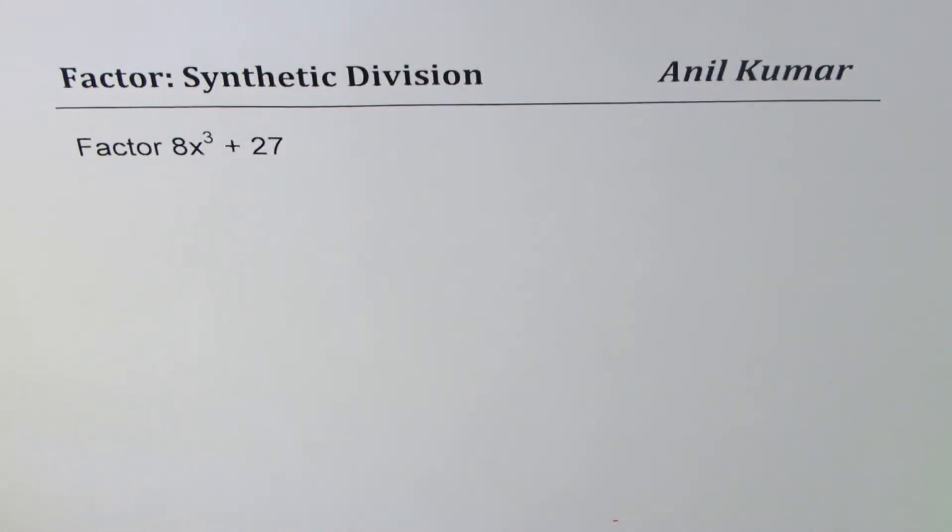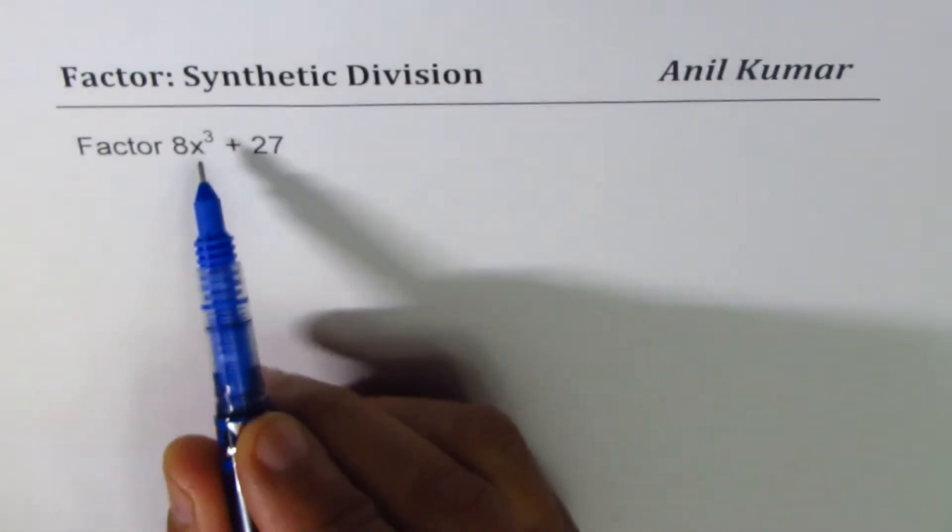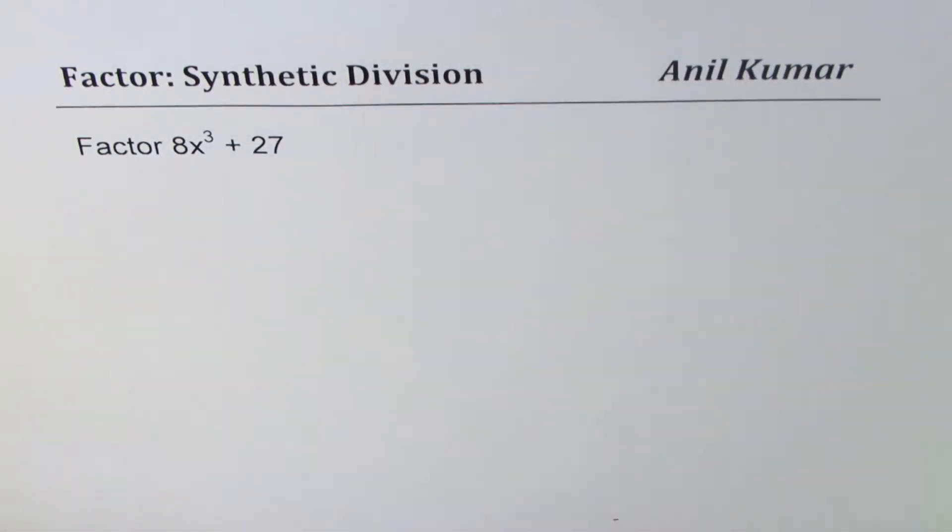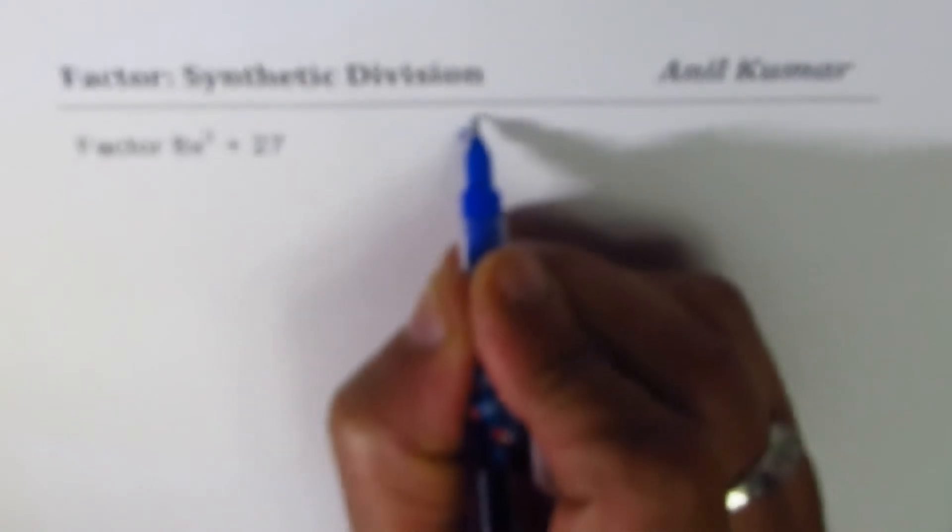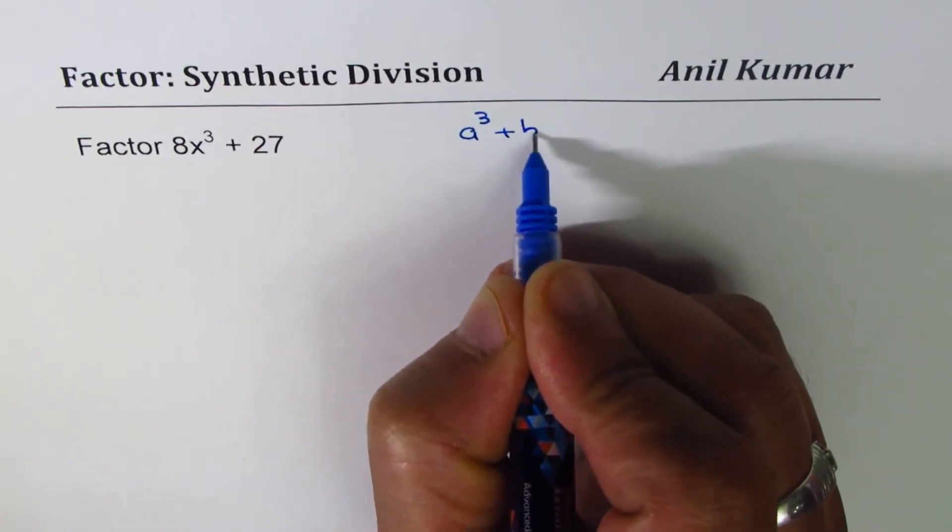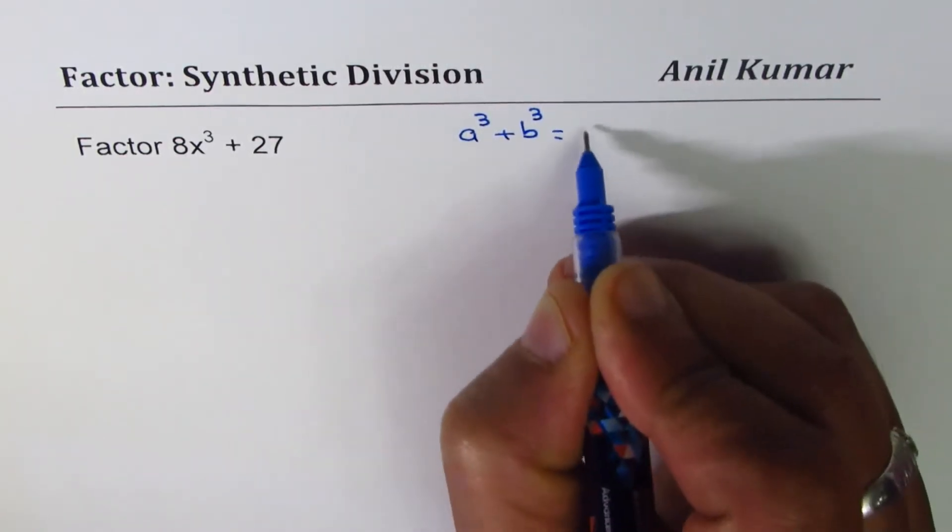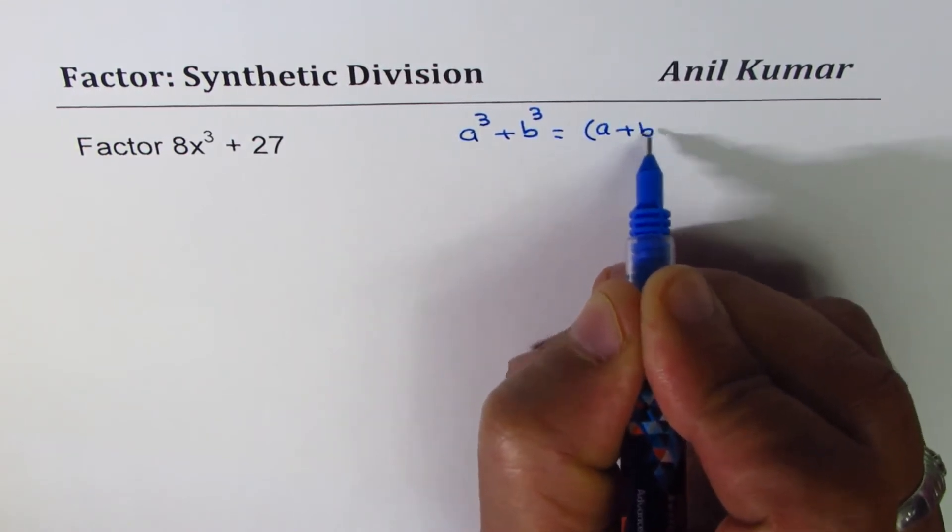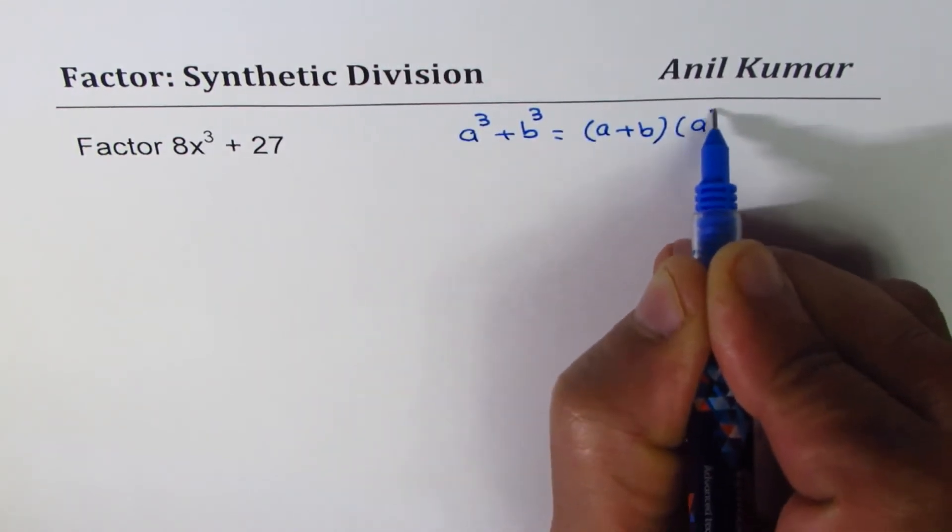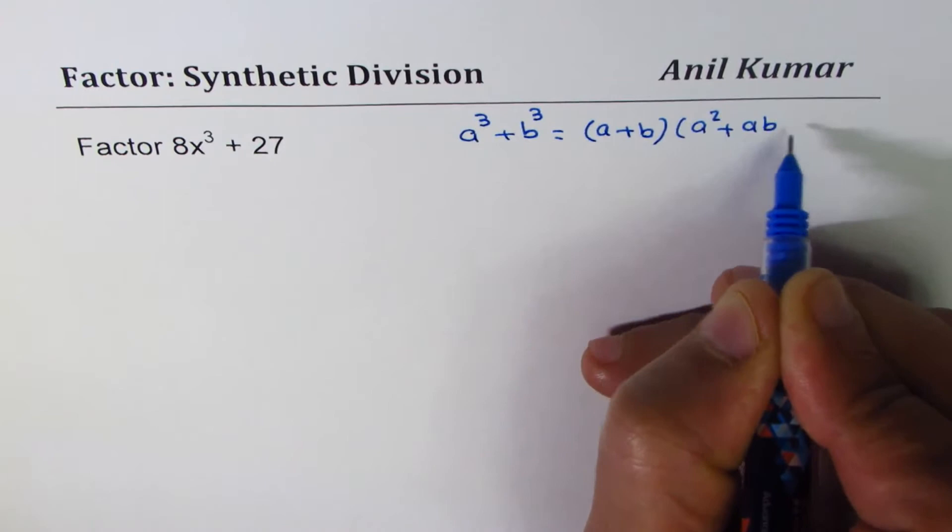I'm Anil Kumar sharing with you a question from my subscriber. The question involves factoring and using synthetic division. We need to factor 8x³ + 27. As most of you know, this could be factored very easily using the formula a³ + b³ = (a+b)(a² + ab + b²).